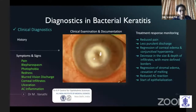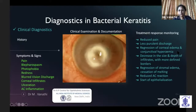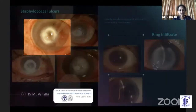Clinical diagnosis — apart from history, the salient symptoms and signs include pain, blepharospasm, photophobia, redness, blurred vision, discharge, corneal infiltrates, ulceration, and anterior chamber inflammation. A detailed clinical examination by slit lamp and documentation with a hand-drawn diagram or clinical photography during follow-up goes a long way in managing these ulcers. What you need to monitor for treatment response includes pain behaviour, discharge, regression of corneal edema and surrounding infiltrates, conjunctival hyperemia, epithelial defect healing, depth of stromal infiltrates, and anterior chamber reaction.